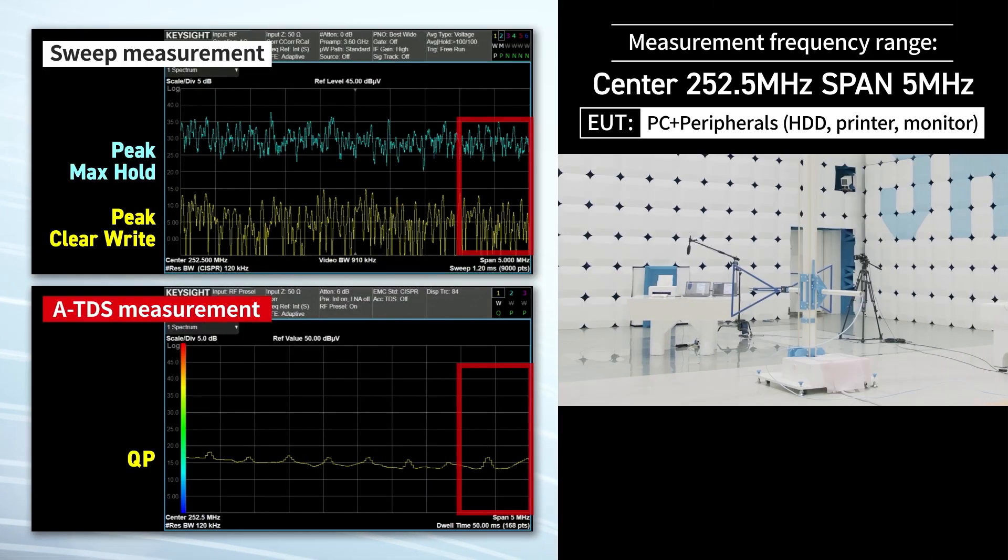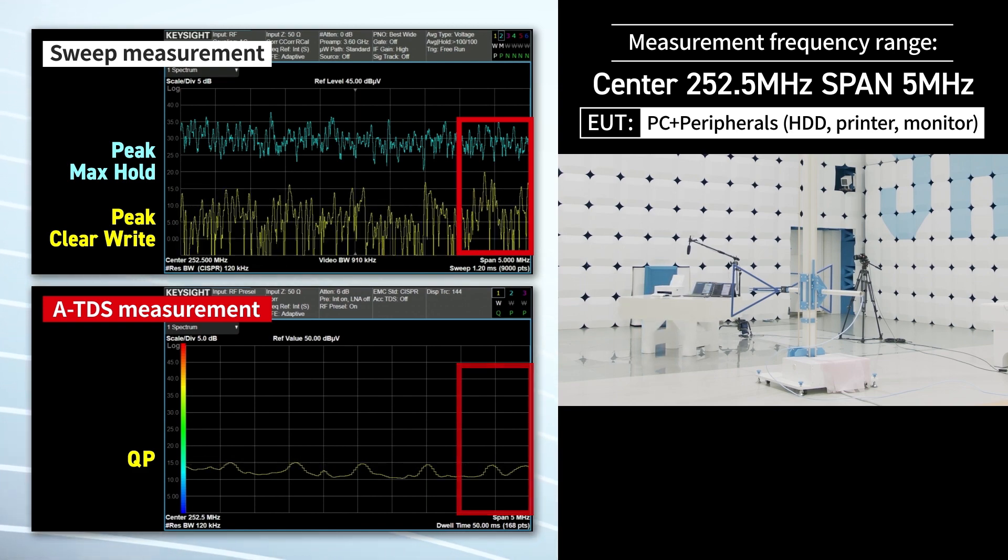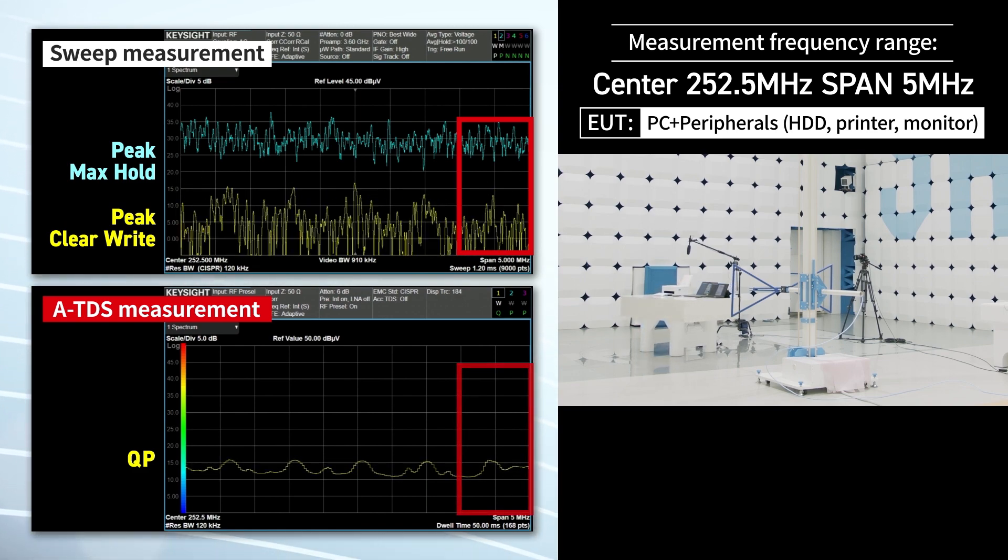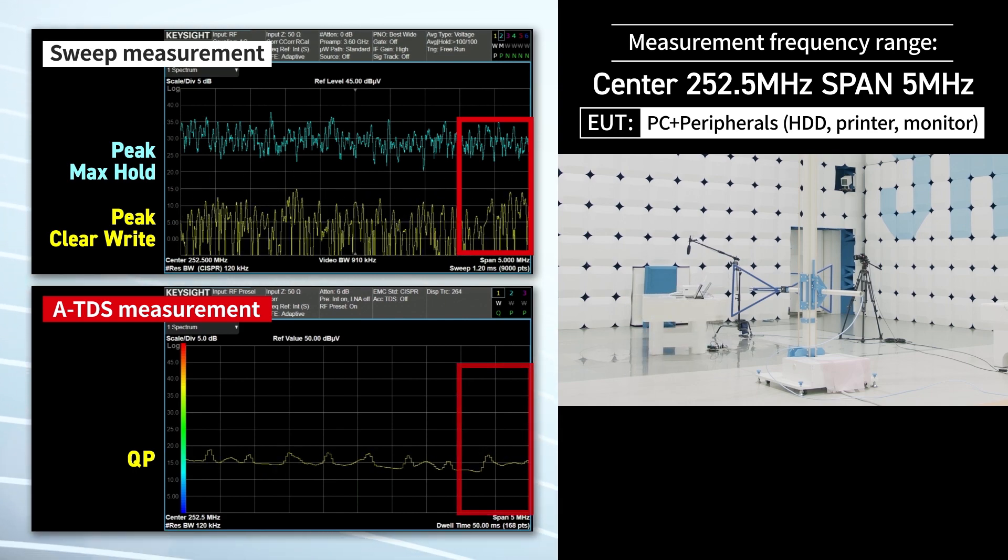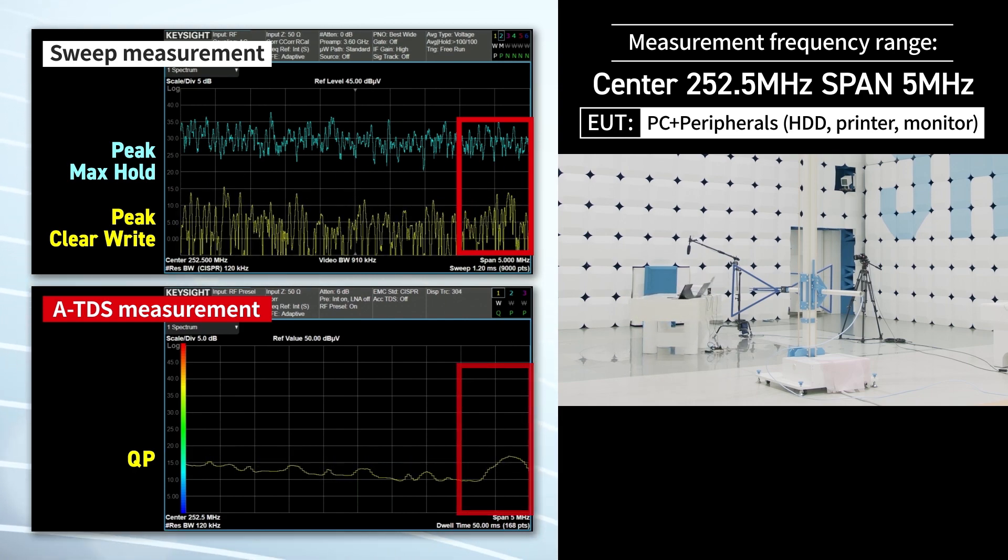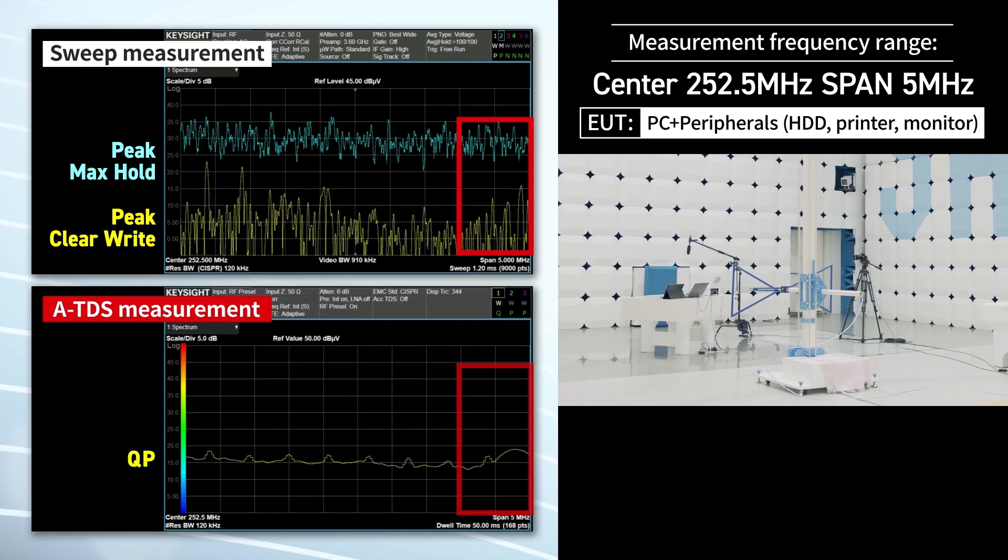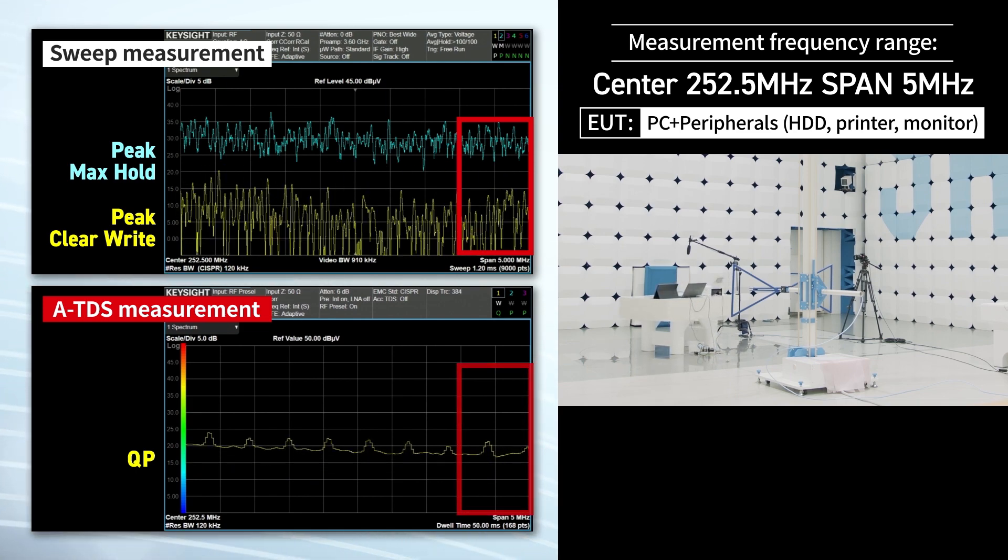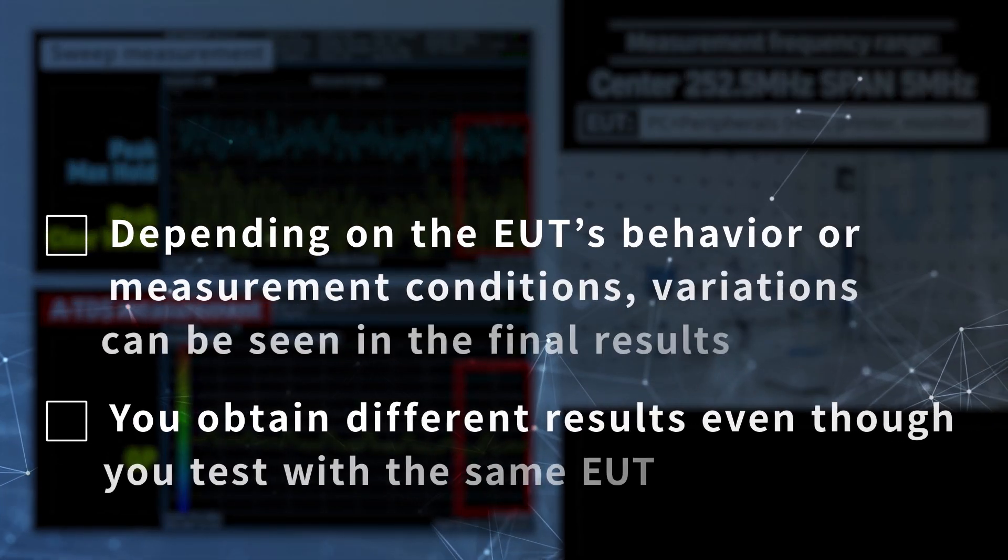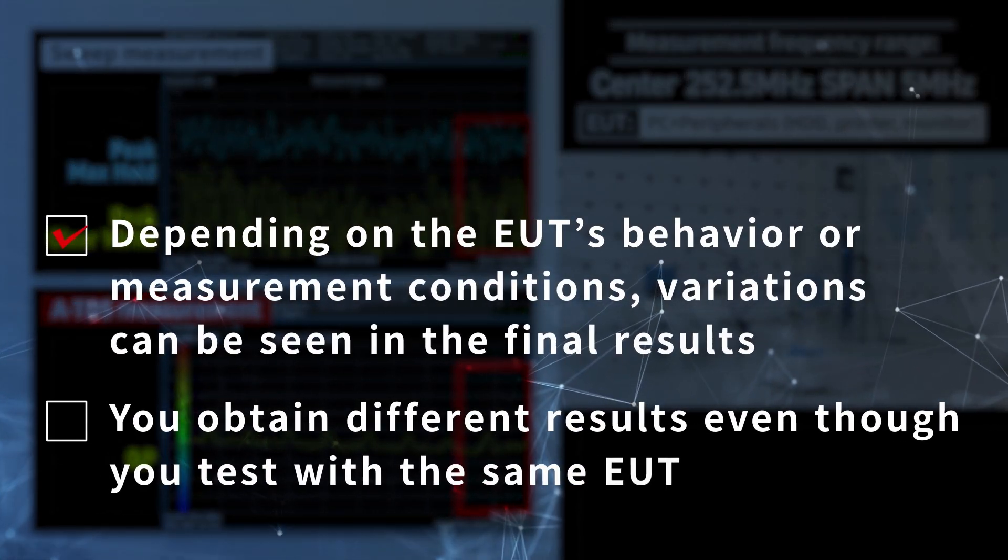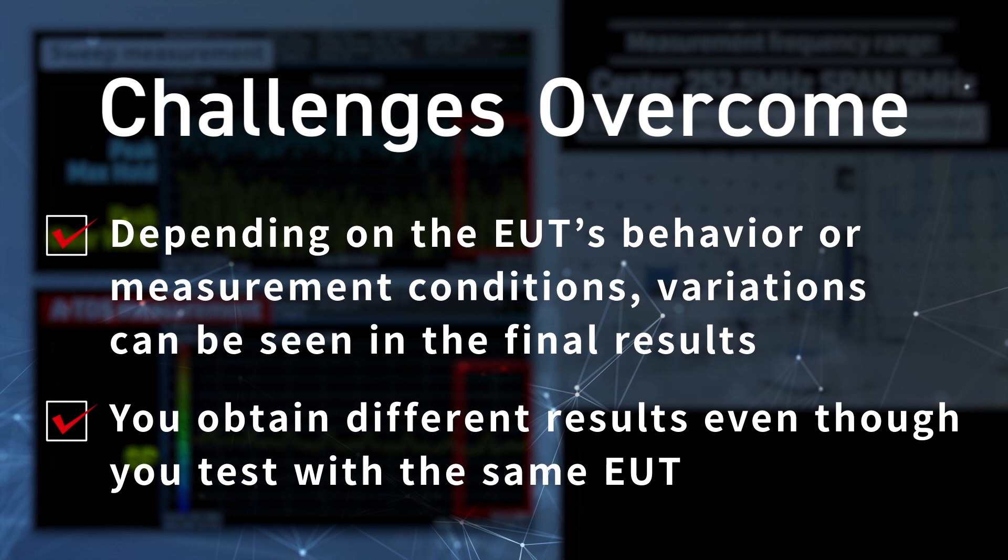Here is another example, measuring another noise in the suspect list. It is obvious in the ATDS measurement this noise consists of several peaks. We can see the level of noise on the right is higher in QP measurements while the turntable rotates. This noise behavior is not observed in sweep measurements, which may lead you to make an incorrect conclusion.